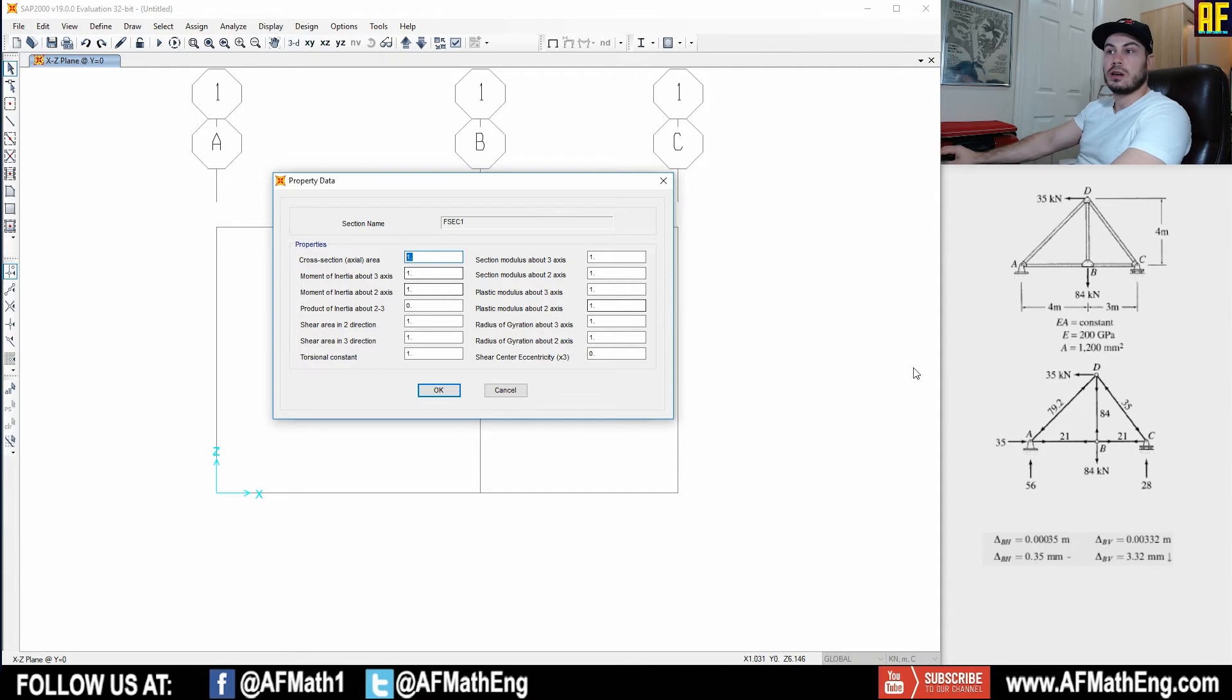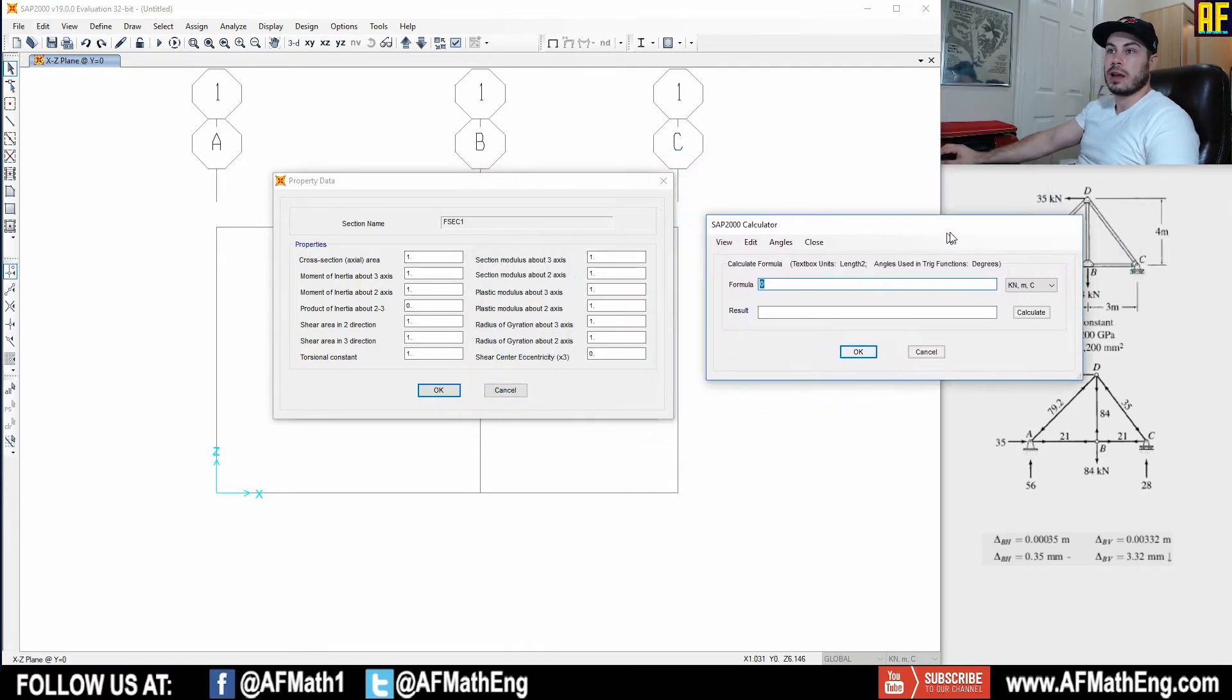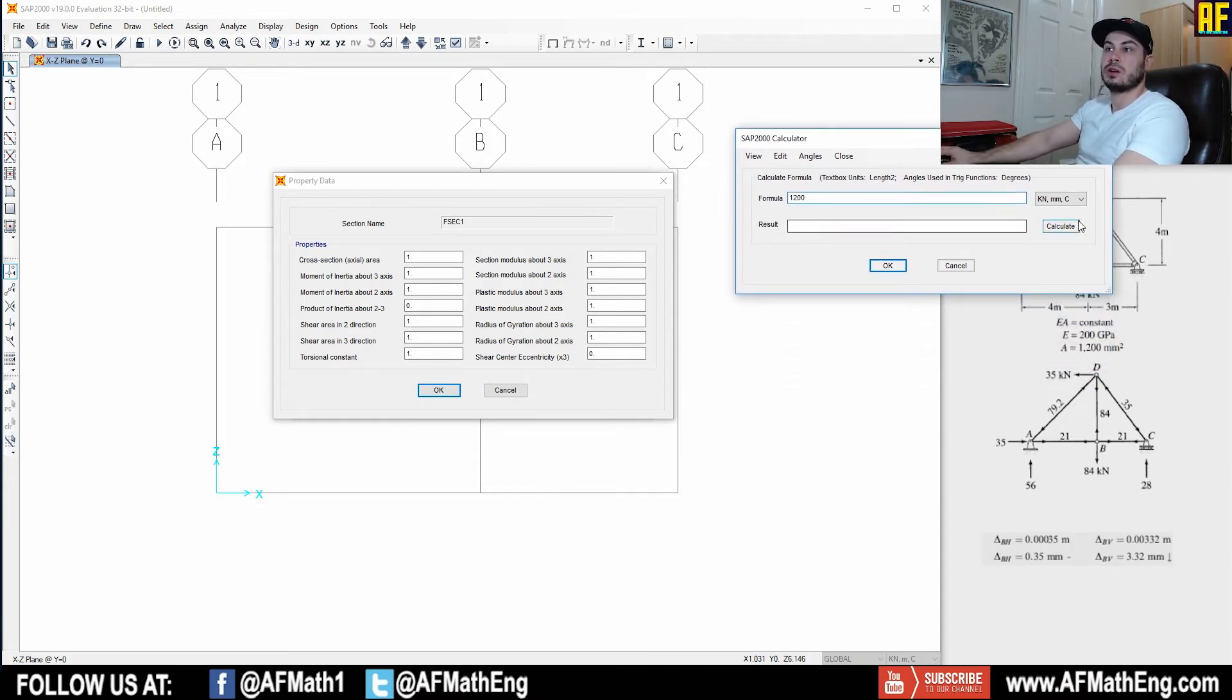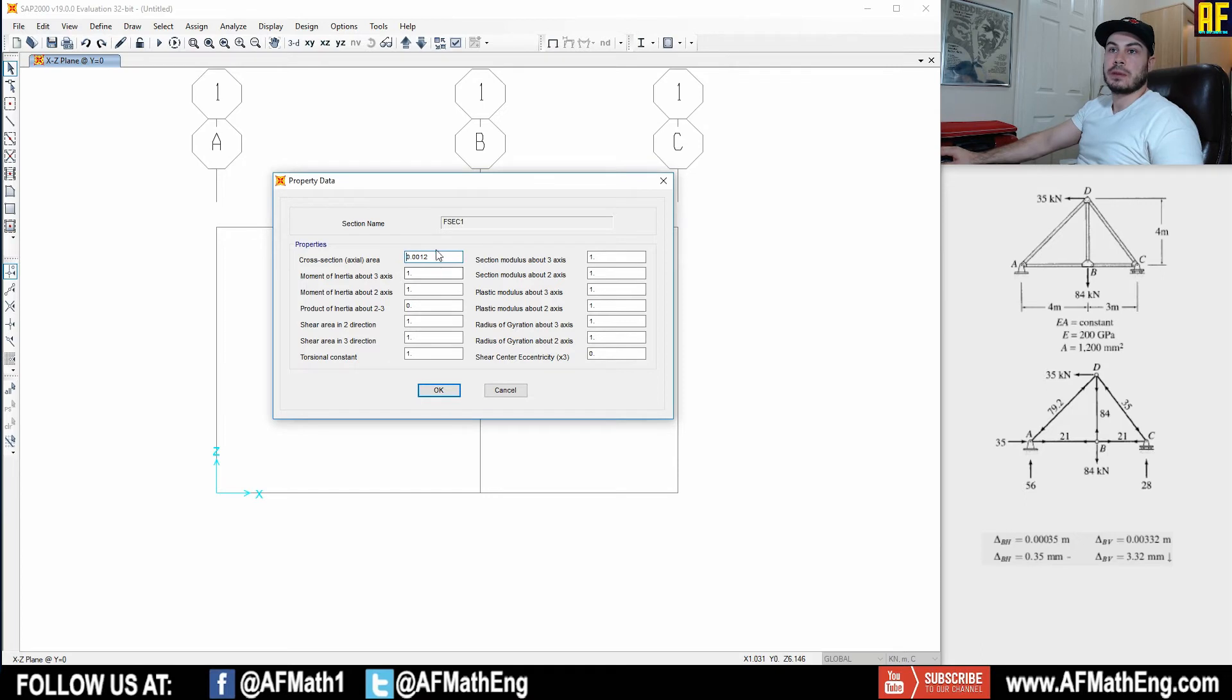So within the cross sectional area here, we're going to put our value of 1200 millimeters squared. As you remember though, we're in kilonewton and meters here. So we do need to go ahead and bring out our calculator and let's go ahead and put that into millimeter. It doesn't matter what force unit you select. Just make sure you select a millimeter unit here. And we're going to put, we have 1200, let me just move that out of the way for you. We have 1200 millimeters squared.